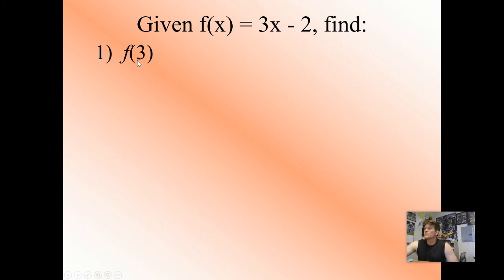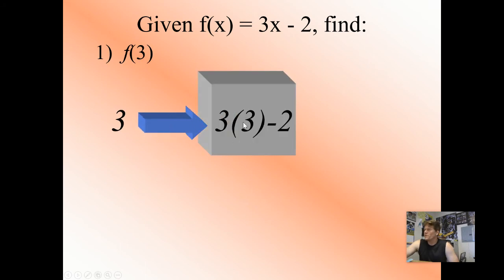So for this one, I'm going to take that 3, plug it into my function machine, and replace the variable with that input value. And then I just solve it. I have 3 times 3 minus 2. Working with our order of operations, I should multiply first. That gives me 9 minus 2, which gives me 7. So my input got plugged into my function, and it spit out my output. So f(3) = 7.